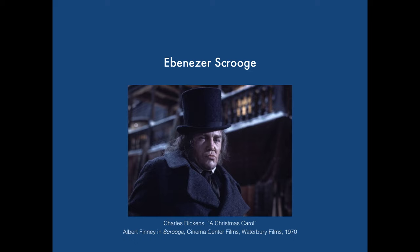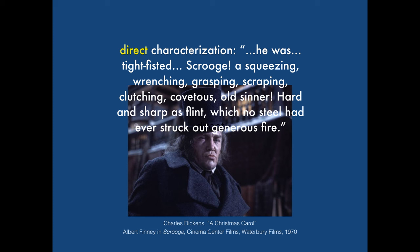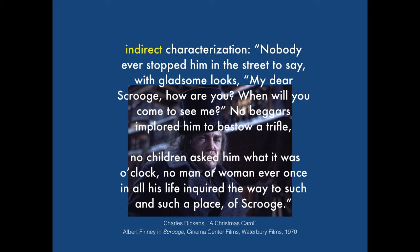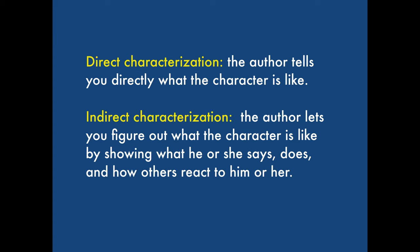Lastly, there's direct and indirect characterization. If the author straight out tells you what the character is like, it's direct characterization. So if the author tells you that Scrooge is a miserable old miser, that's direct characterization. But if the author reveals what the character is like by what the character says, does, and how others react to him or her, that's indirect characterization. We can see that Scrooge is a miserable old miser by seeing how he treats others, his appearance, and how everyone reacts when they see him coming. Direct is when the author tells you directly; indirect is when you figure it out using your powers of observation.